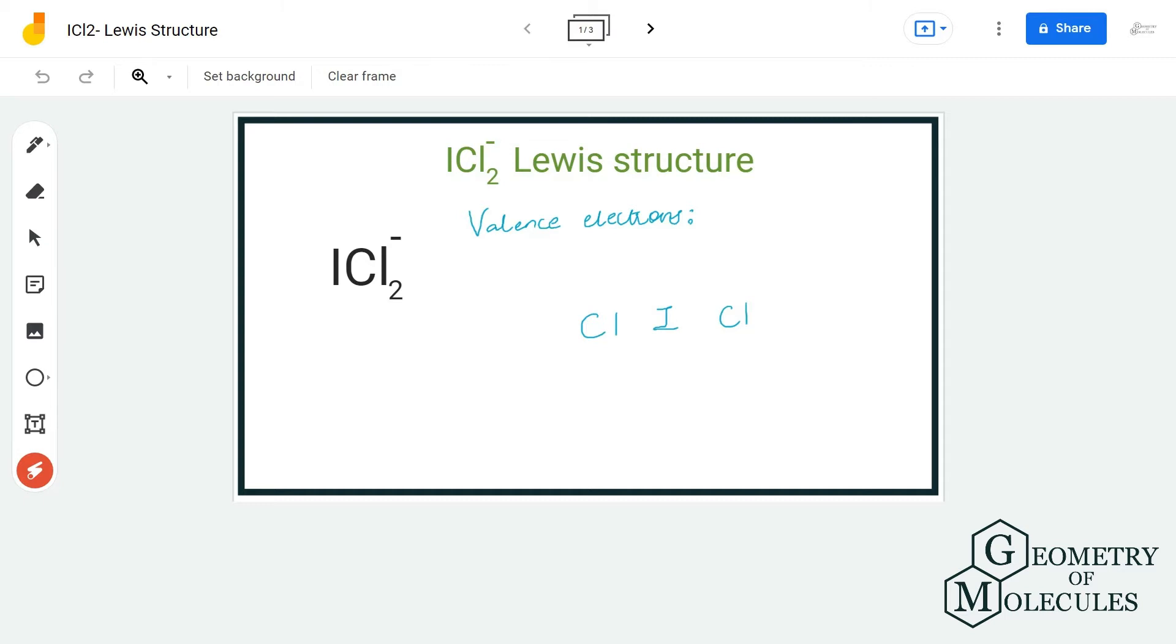Hi guys, welcome back to our channel. In today's video we are going to help you with ICl2- Lewis structure. It is an anion because it has a negative charge, which means it accepts an additional electron.